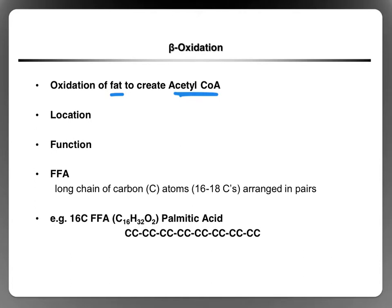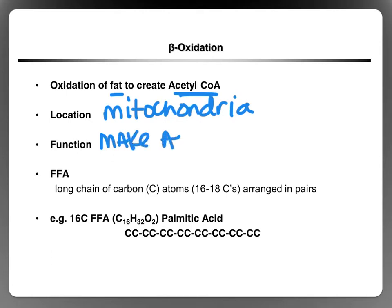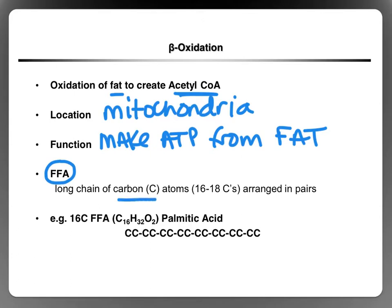Beta-oxidation is the oxidation of fat to create acetyl-CoA — it's that first step in aerobic ATP production. The location of beta-oxidation is within the mitochondria. It is an aerobic oxidative process. The function of beta-oxidation is to make ATP from fat. The usable form of fat that we use to make ATP is FFA. The structure of FFA is a long chain of carbon atoms arranged in pairs. The two most common FFA molecules used to make ATP are 16-carbon and 18-carbon chains.